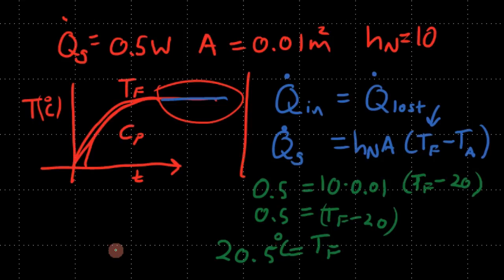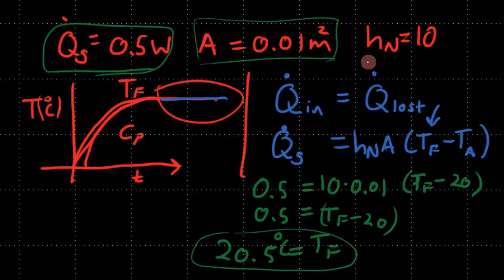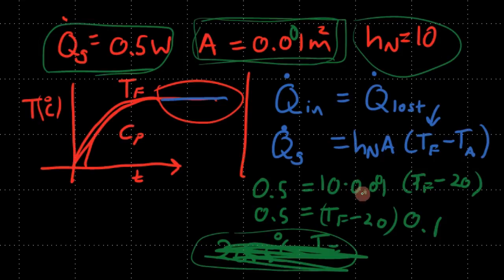Look, we just solved for the final temperature. Given this heat generation and this area, which is actually quite large, this is why the temperature didn't increase very much. If you decrease the area, let's say we made this area 10 times smaller to 0.001, this would end up being 0.1 here. So you would get 5 equals T_F minus 20, so then you get 25 degrees. Because you reduced the area.